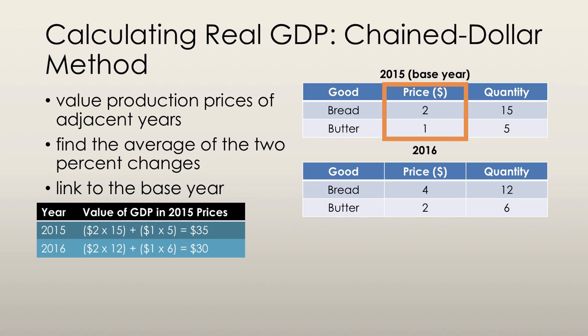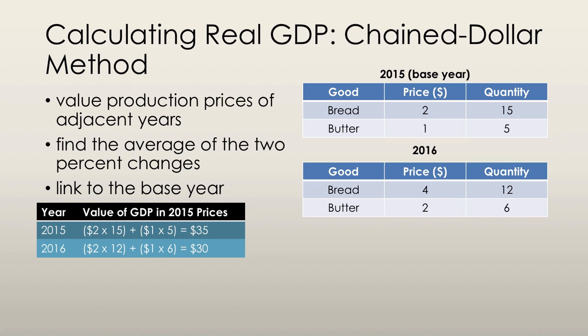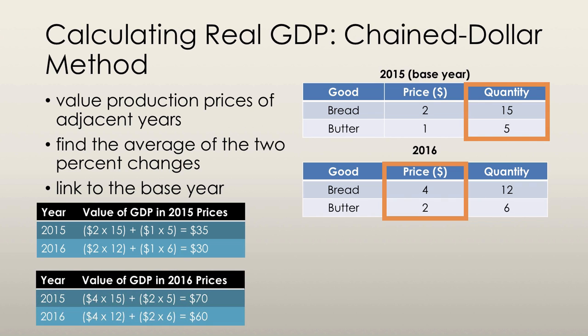Then we're going to take the prices of 2015, multiply them by the quantities of 2016, and we're going to get another GDP value — as you can see, the calculations are all shown. We're also going to take the prices of 2016 and multiply them by the quantities of 2015, which gives us a GDP value of $70. Then we take the prices of 2016 multiplied by the quantities of 2016 to get a GDP value of $60.